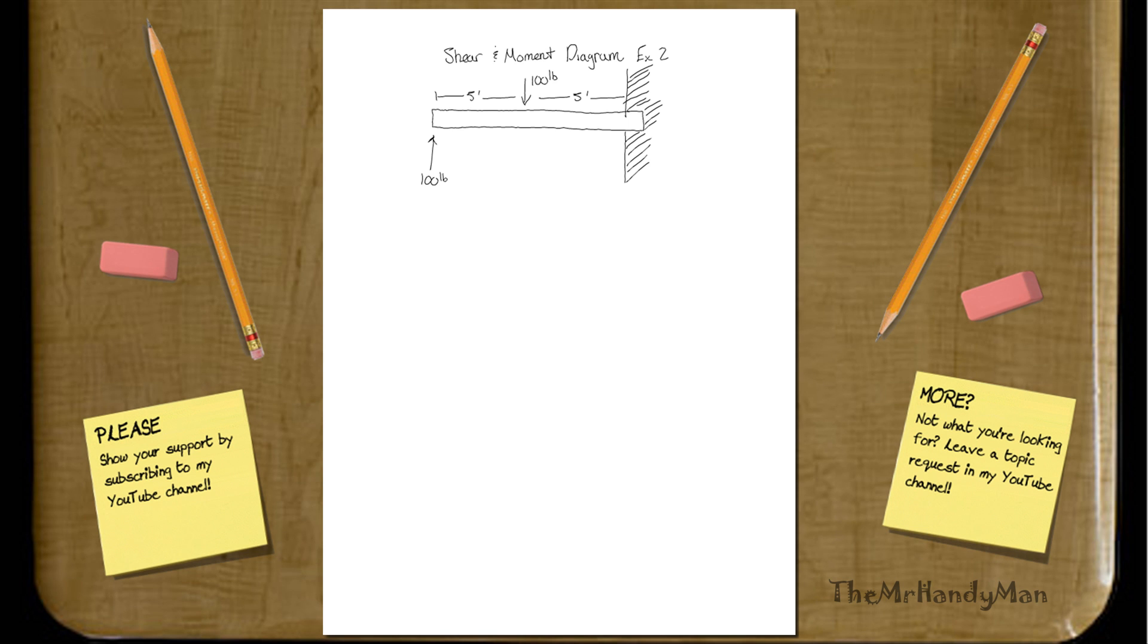Hi there, this is the second example of shear moment diagrams. First of all, this is just a basic cantilever beam with two forces applied onto it, which seem to be coupling forces. So, let's just work it out. Remember this is a cantilever beam, not a simply supported.